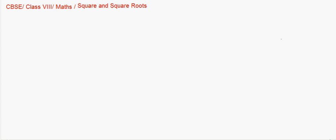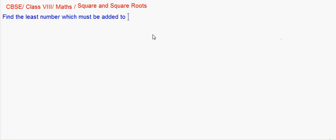The previous question was about the number to be subtracted. Here the question is: find the least number which must be added to 306452 to make it a perfect square.